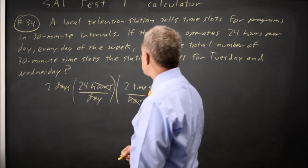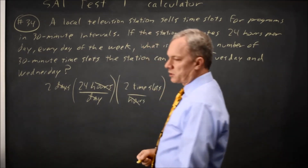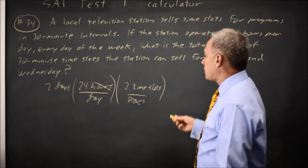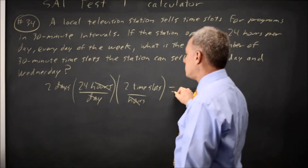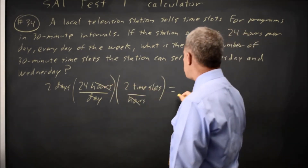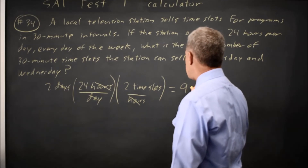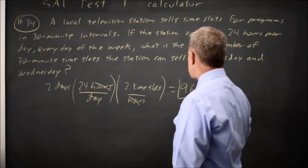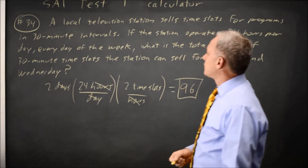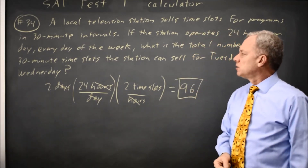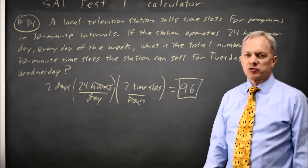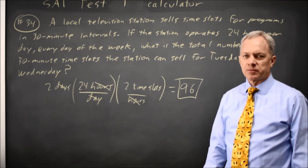So 2 times 24 times 2 — my calculator tells me 24 times 2 is 48, times 2 is 96. So we get 96 time slots for Tuesday and Wednesday if we operate 24 hours a day.